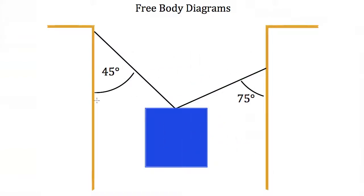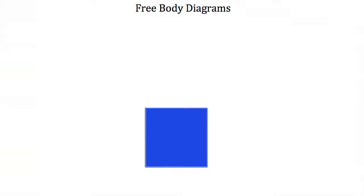Now let's look at one of the most common free body diagrams you'll be required to draw in a physics class: the suspended block. This block is suspended by two strings, each approaching the block at a different angle. To draw the FBD, first remove the block from its environment — then draw all the forces acting on it. Gravity is always acting on the block, and we also have those two strings, because without them the block would fall.